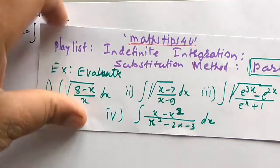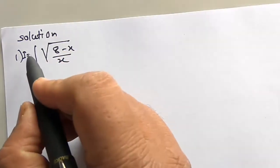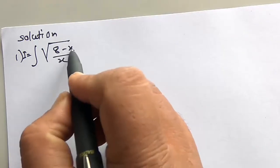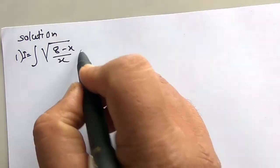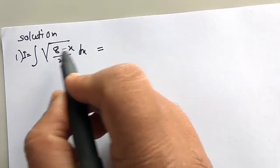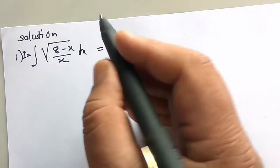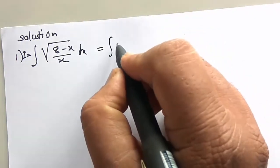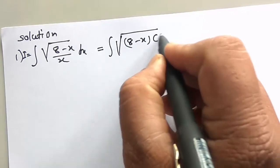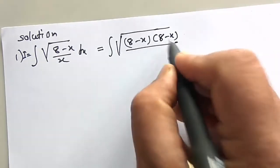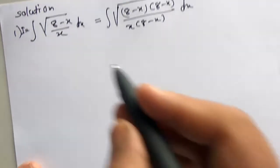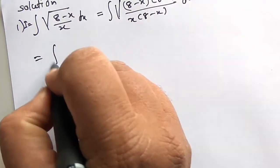Let I = integration of √((8−x)/x) dx. We multiply both the numerator and denominator inside the square root sign by (8−x), giving integration of √((8−x)(8−x) / (x(8−x))) dx, which simplifies to integration of (8−x) / √(x(8−x)) dx.